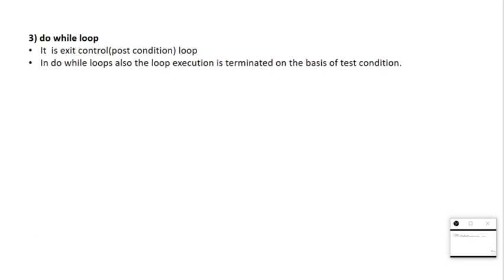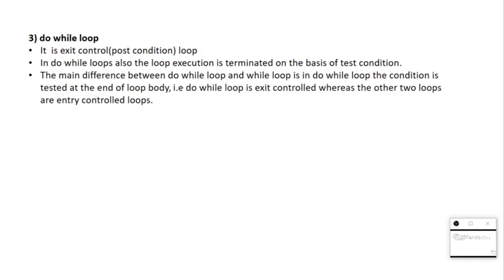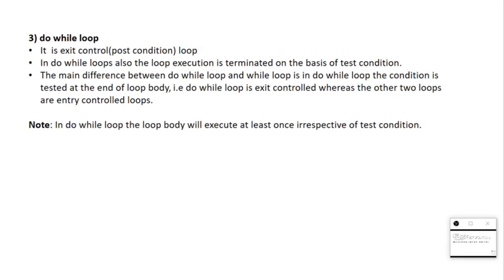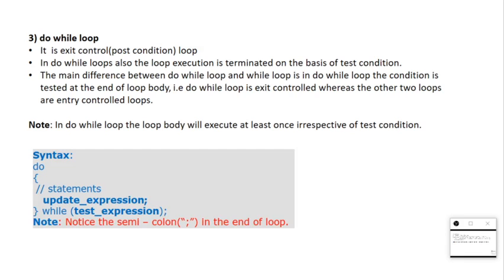Now let's come to the do-while loop. Do-while is an exit control loop — it terminates based on the condition, but the main difference is it checks the condition at the end of the body. Note: in do-while, the loop body executes at least once irrespective of the condition. The syntax is: do { statement; update expression; } while(condition); — note the semicolon at the end is mandatory.